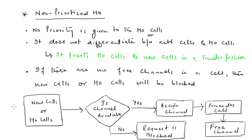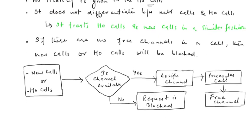This non-prioritized handoff treats new calls and handoff calls in a similar fashion. When these requests come to the server system, the base station checks if any channel is available. If a channel is available, it is assigned to that particular call request — whether it is a handoff call or a new call — then the call is proceeded, and after completion the channel is freed. If there is no available channel, the call request is blocked.